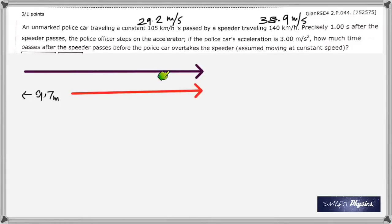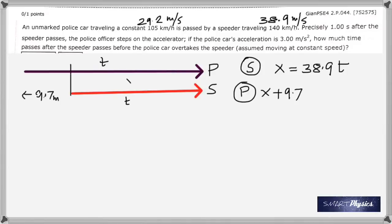So the police takes t seconds to go from there to there, and the speeder takes t seconds to go from there to there. All right, and the displacement for the speeder is given by this equation because he's moving at constant speed, but for the cop, since he's accelerating, it's going to be v_i times t plus one half a times t squared.